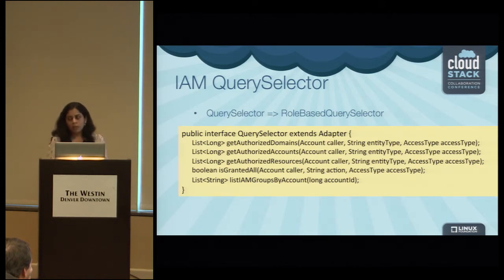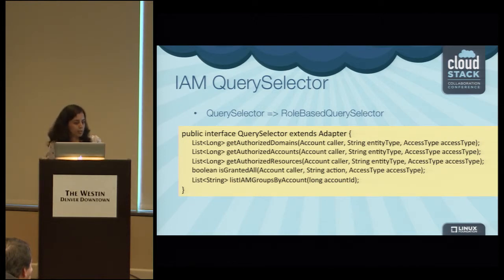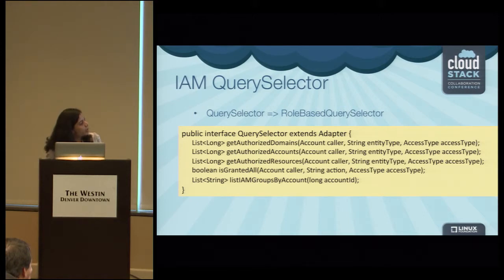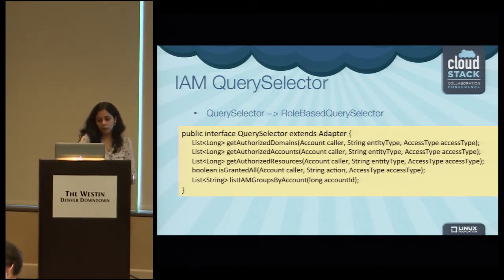We have another adapter called query selector, a new adapter introduced in CloudStack to facilitate query and listing APIs. Previously, most listing APIs handled their own access control logic hard-coded everywhere. To have a standard pattern, we introduced this query selector adapter — it has methods to get authorized domains, accounts, and resources for a given caller.